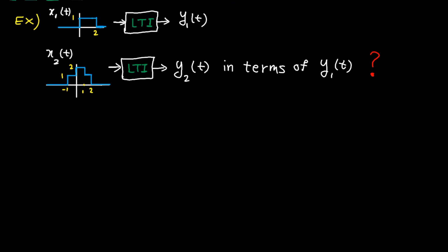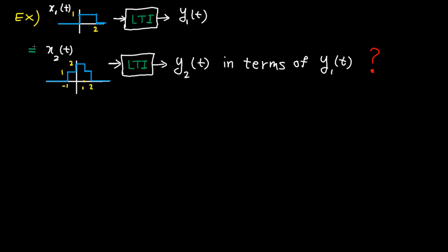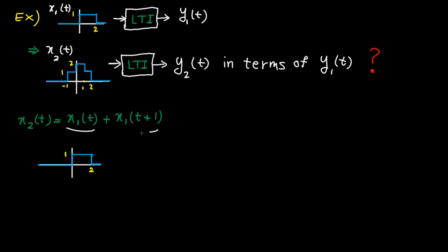We know the system is LTI. If you carefully look at X2(T), you can easily see X2(T) is basically X1(T) plus X1(T+1). Let me show you why. This is X1(T), which is given. This is the X1(T) signal shifted by 1 unit to the left. 0 goes to minus 1, and 2 goes to 1. The amplitude does not change. This is X1(T) and this is X1(T+1).